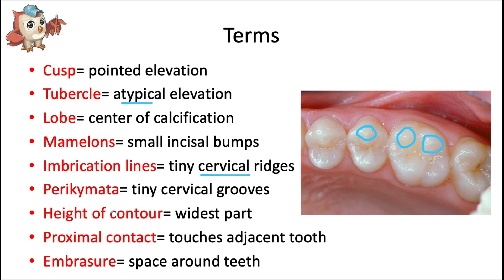The height of contour is the widest part of a tooth — the part of a certain surface that sticks out the most on the facial, lingual, or other aspect. The proximal contact is the area of a tooth in contact with an adjacent tooth in the same arch. An embrasure is the V-shaped valley space around teeth — as opposed to a diastema, which is a gap between teeth — and it allows for the passage of food around teeth so food is less likely to get stuck.